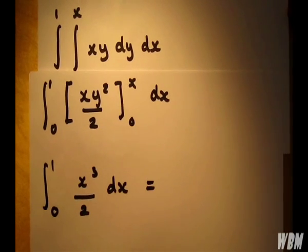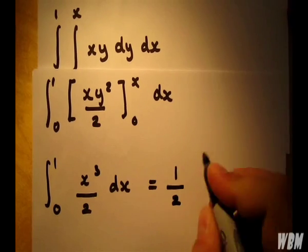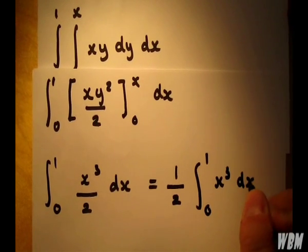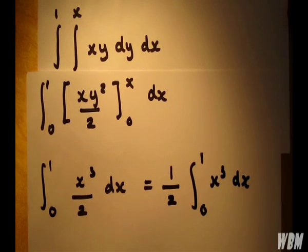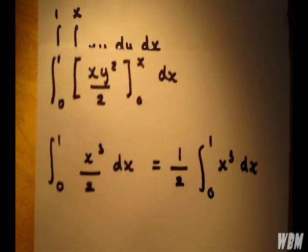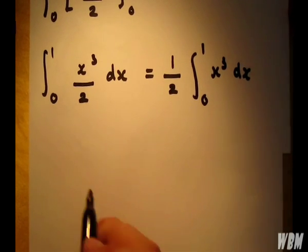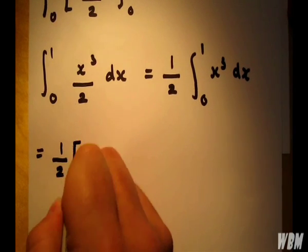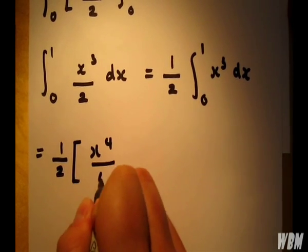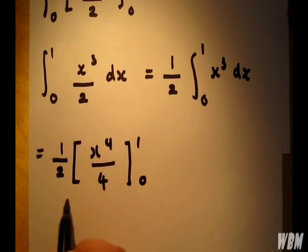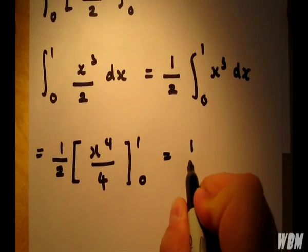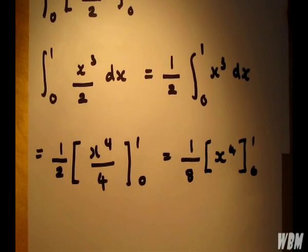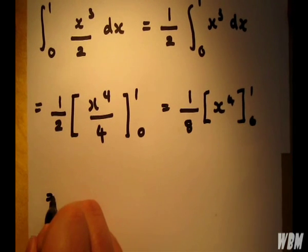I'm going to simplify that by taking the 2 out. And I'll just finish off the integration with respect to x now, which is x to the 4 over 4 between 1 and 0. Taking the 4 out again, that gives us 1/8.